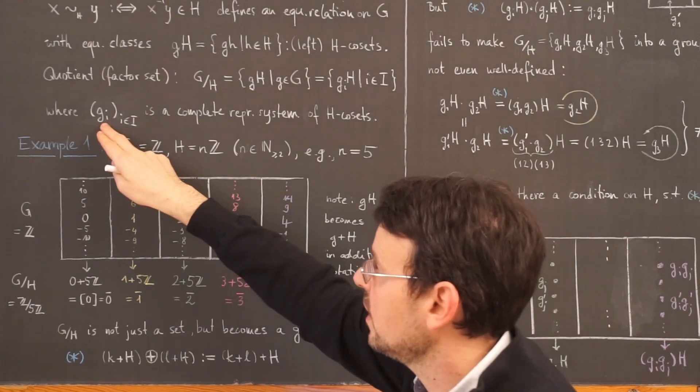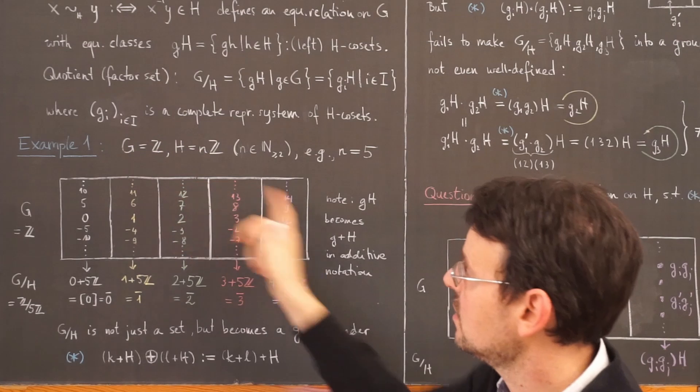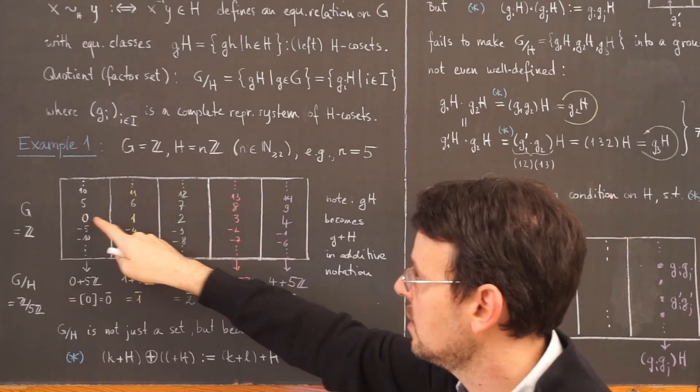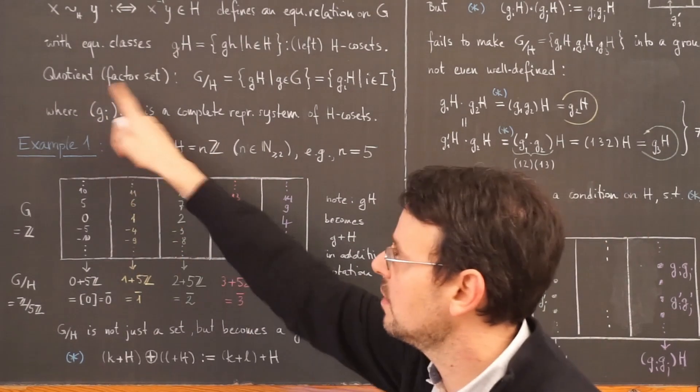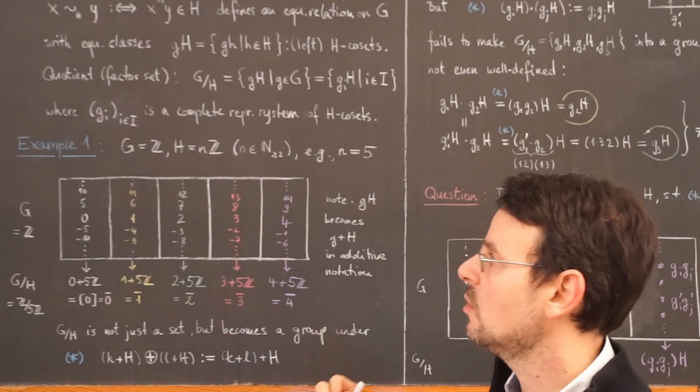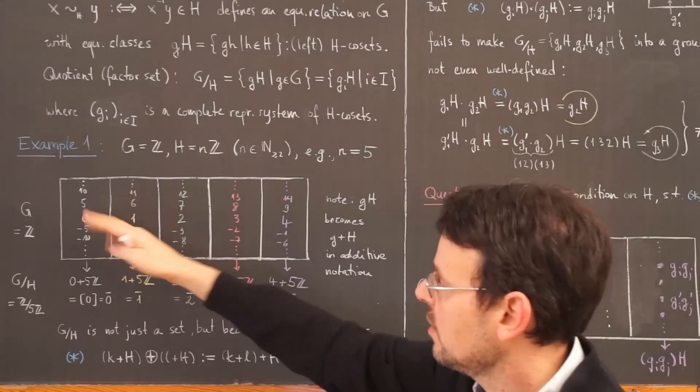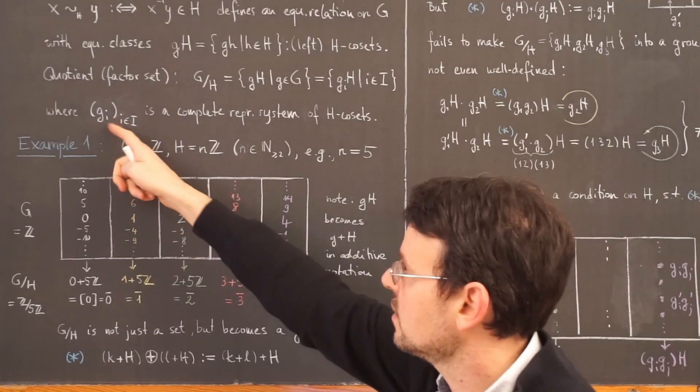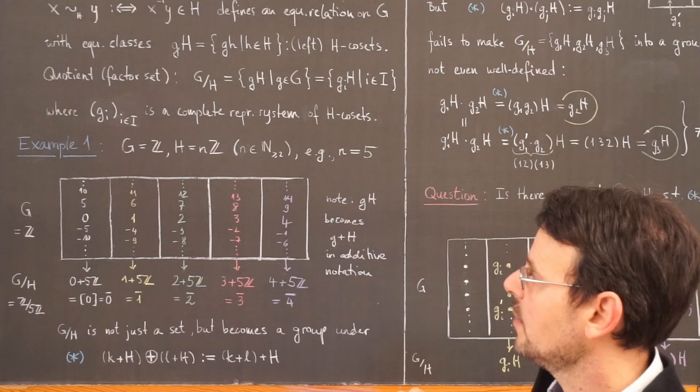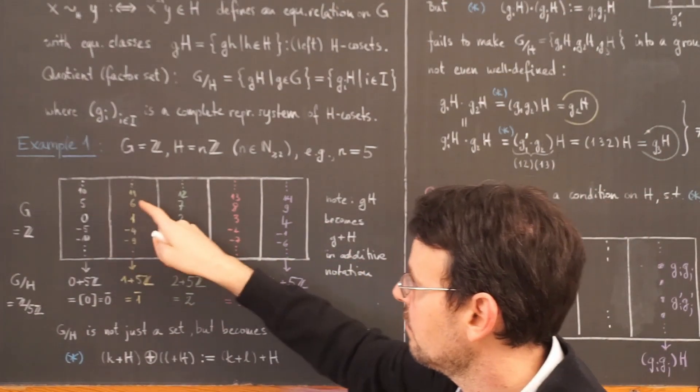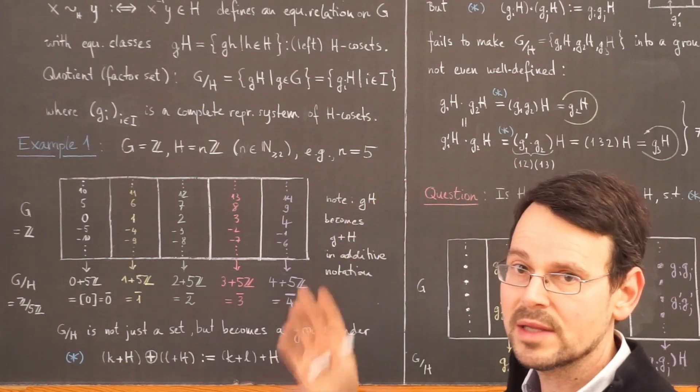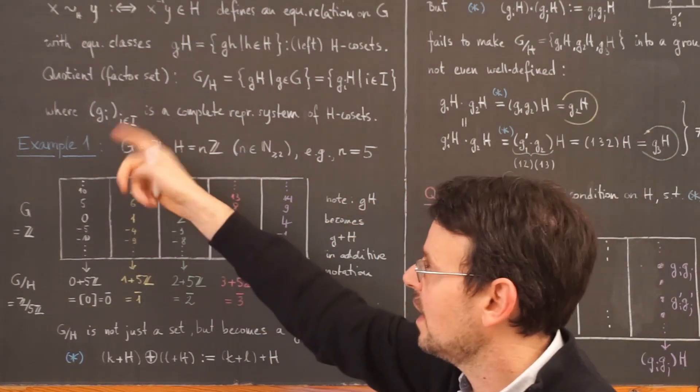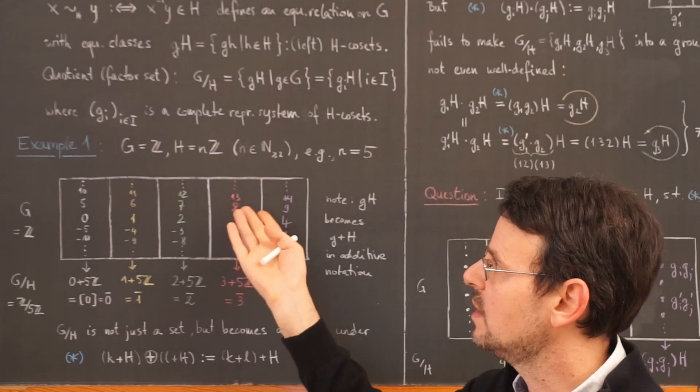So a complete representative system of these cosets would be the numbers 0, 1, 2, 3, 4. So you see, there's no need to make an overcomplicated definition. Simply think of these 5 numbers as a complete representative system. I might as well have taken 5, 6, minus 3, minus 7, minus 6, for example. Doesn't matter. I always end up with the same number of elements.